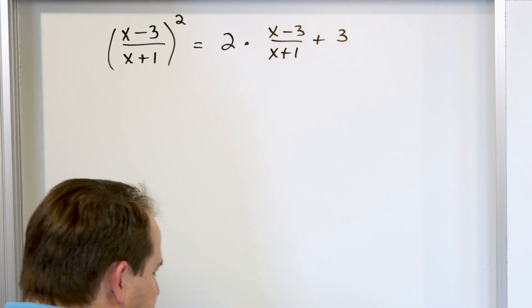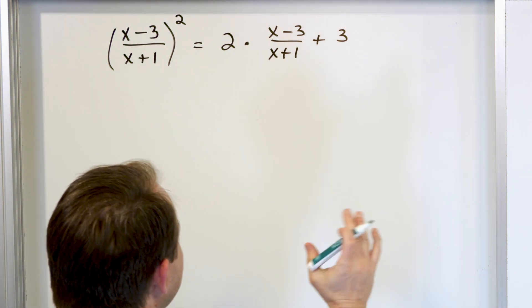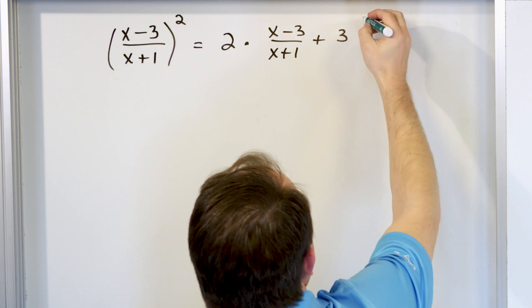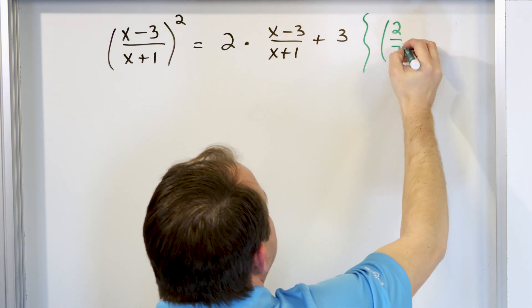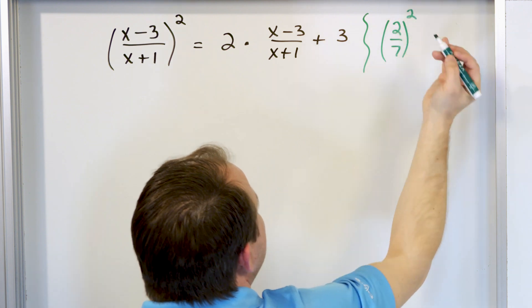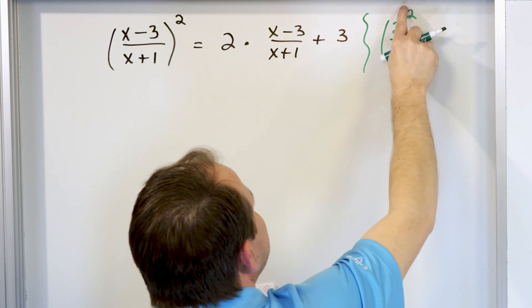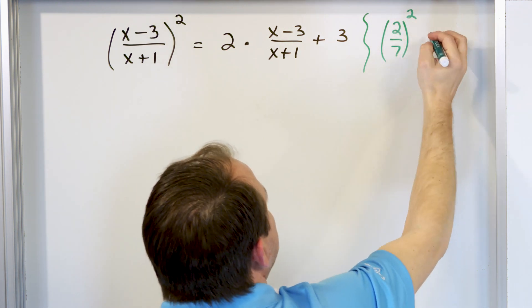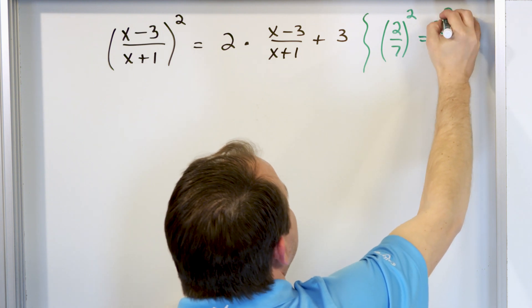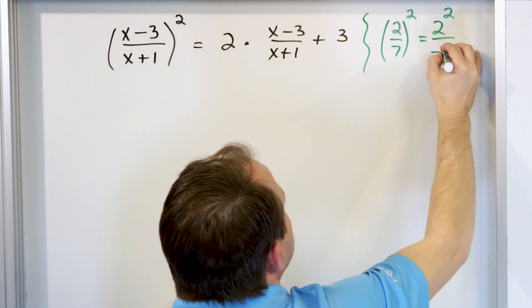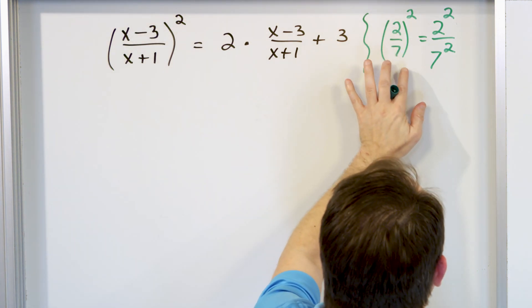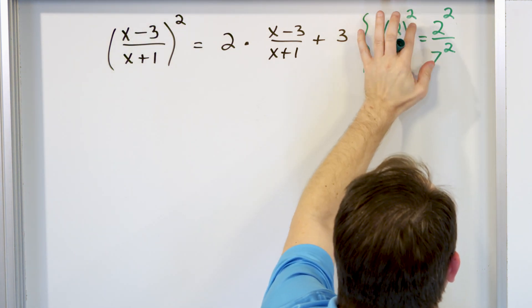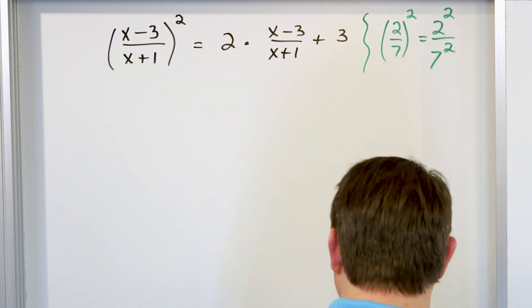For instance, remember we talked a long time ago in algebra. I'll go ahead and write this over here. If you have a fraction like 2/7, and it's raised to the power of 2, how do we handle that? We say, well, we take the exponent, apply it to the top, and we apply it to the bottom. So it's 2 squared over 7 squared, right? So you can remove this fraction inside the parentheses, where this exponent is applied to the whole thing, and apply it separately to the top and the bottom.